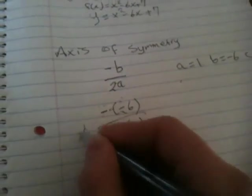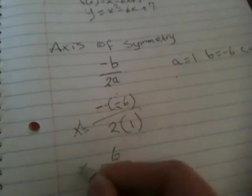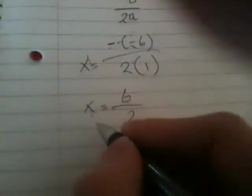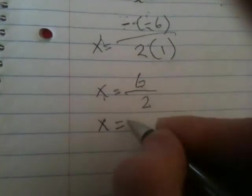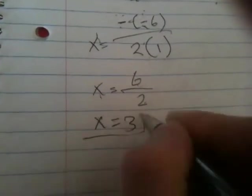So x equals 6 divided by 2, which is 3. This is our axis of symmetry.